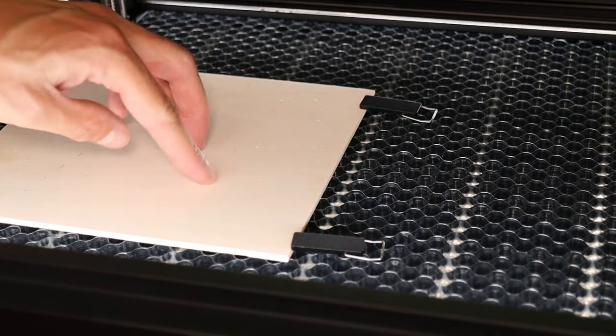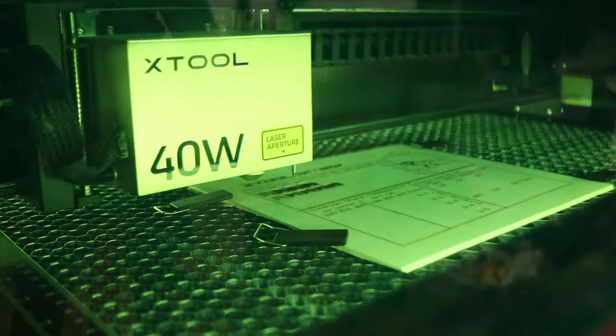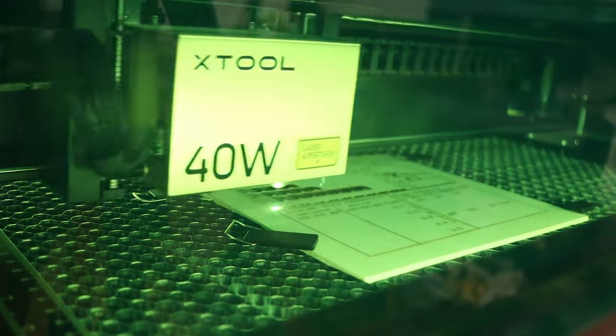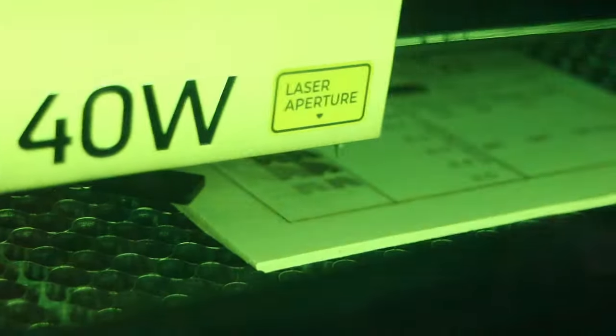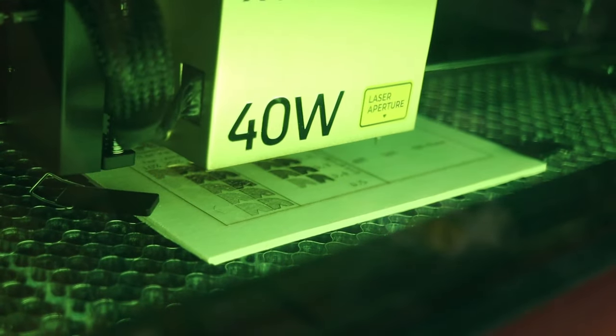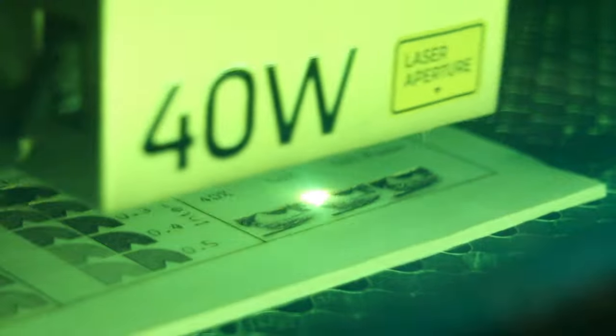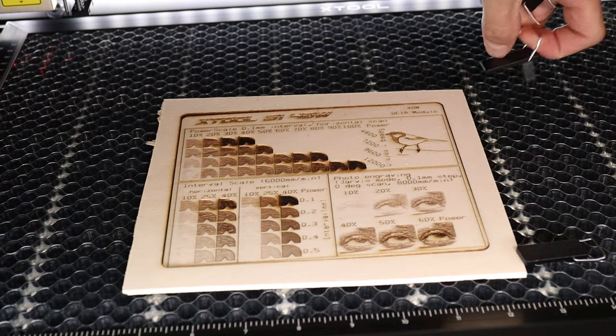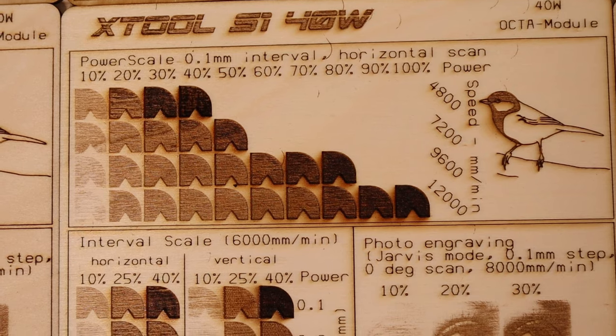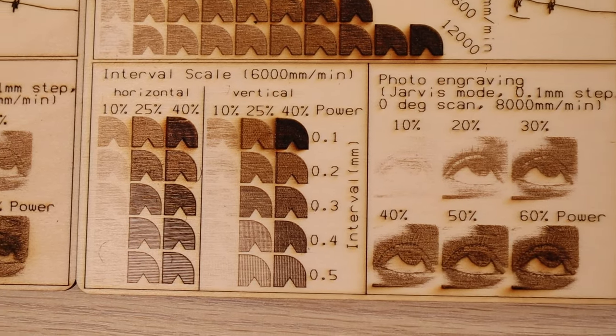Now let's start testing the X-Tool S1 with my standard plywood engraving test. My standard plywood engraving test pattern consists of a power scale test, which shows how well the laser engraves at different speeds. The interval test shows us how the machine performs at engraving in horizontal and vertical direction. Any difference in performance would suggest a rectangular laser dot. The photo engraving test shows us how well it can engrave photos at different power levels. The power scale test shows a very good contrast even at high speed, which indicates good control over the output power across all power percentages. This is great for engraving photos as more contrast can be achieved.